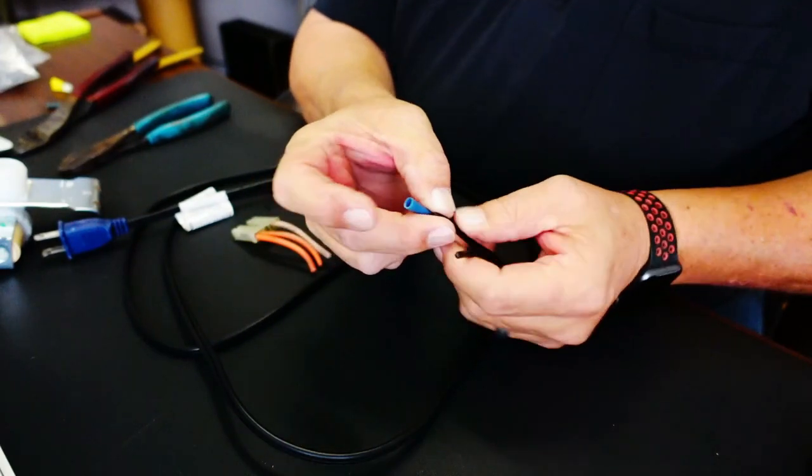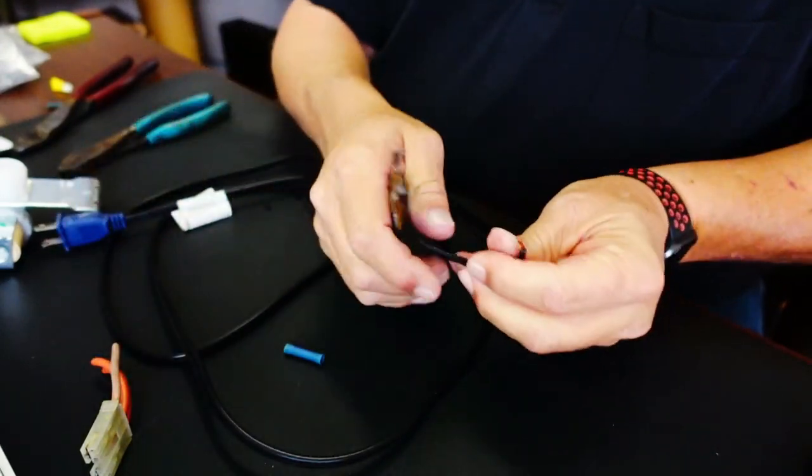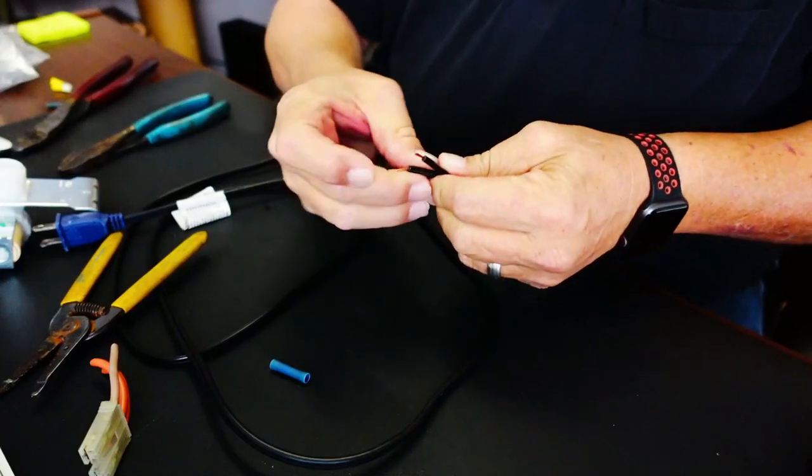Got all my pieces and parts here and I'm going to go ahead and trim this back. I'm going to pull this apart enough to where I can get a butt connector over this and over that so that I can use this molex plug. Get my little strippers here, and I got that pretty even.